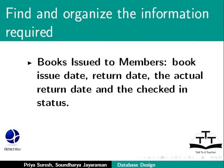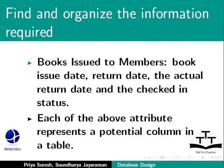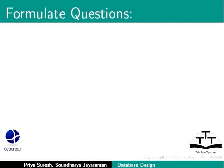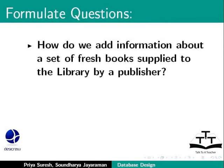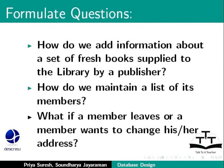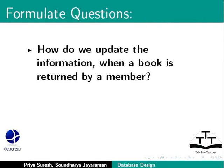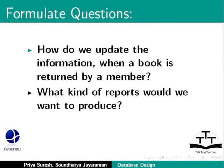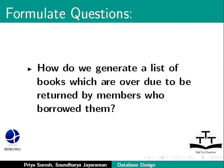When a book is issued to a member, there is a book issue date, return date, actual return date, and the checked-in status. These individual items are also called attributes. Each of these attributes represents a potential column in a table. At this point, we can formulate questions such as: How do we add information about a set of fresh books supplied to the library by a publisher? How do we maintain a list of its members? What if a member leaves or wants to change his or her address? How do we update the information when a book is returned? What kind of reports would we want to produce? Which books are most read among the readers? And how do we generate a list of books which are overdue to be returned by members who have borrowed them?